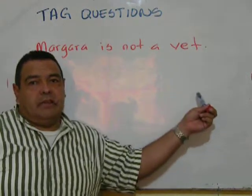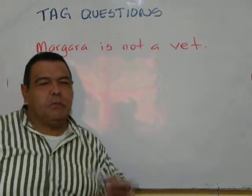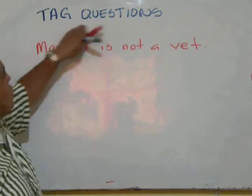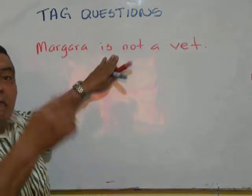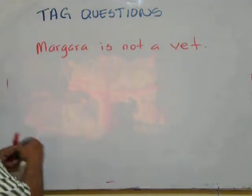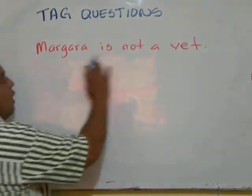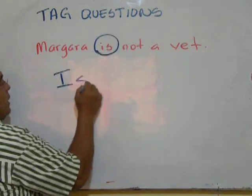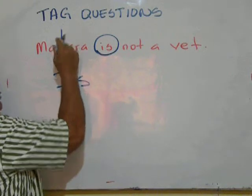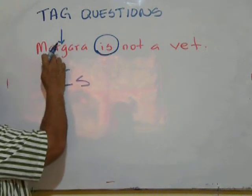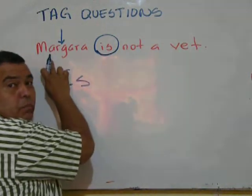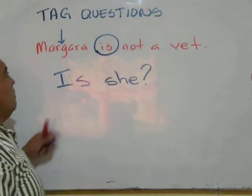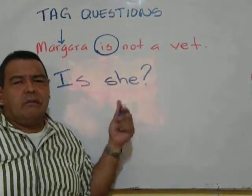Mijana is not a vet — she will be in the future, but right now she's not. So I'm going to make the tag question in a positive way. I have to switch the subject name to her pronoun. Mijana is not a vet, is she?